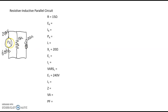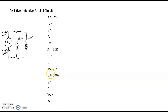We have an applied voltage of 240 volts at 60 hertz. We have a 15 ohm resistor that is wired in parallel with a 20 ohm inductive reactance of this inductor. This is a parallel circuit because we have more than one path for current to flow. So we're given 15 ohms for the resistor, 20 ohms for the inductive reactance, and 240 volts as the total applied voltage.